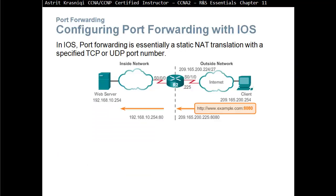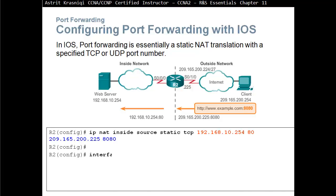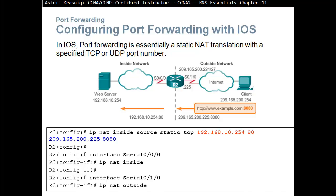Configuring port forwarding with IOS: port forwarding is essentially a static NAT translation with specified TCP or UDP port numbers. For example: IP NAT inside source static TCP 192.168.10.254 port 80 outside 209.165.200.225 port 8080. So if a client puts in that IP address with port 8080, the router translates it and forwards the communication to the web server.